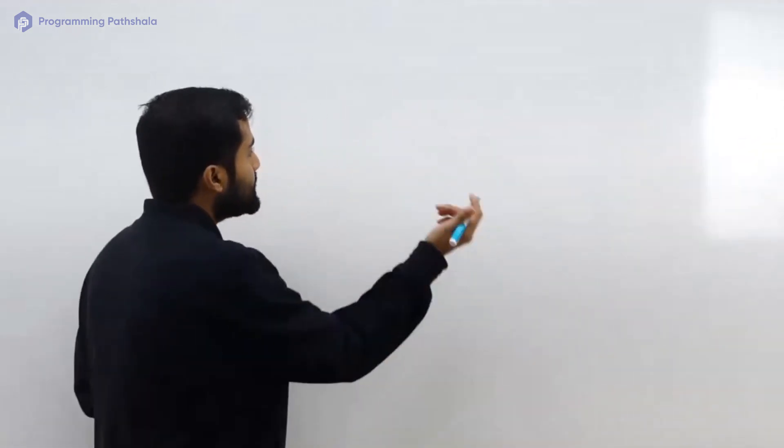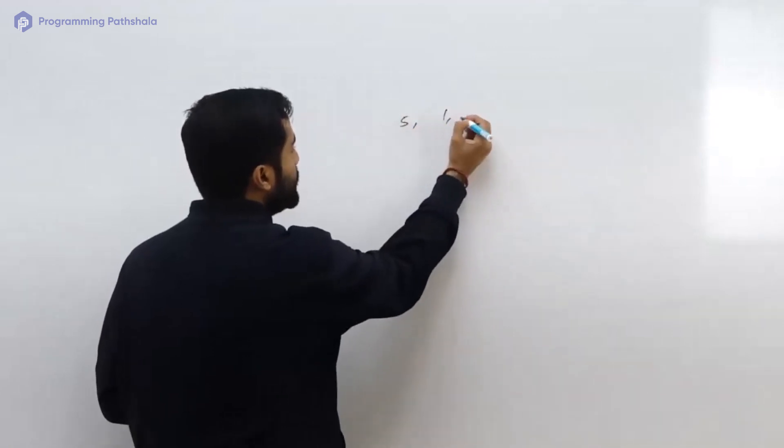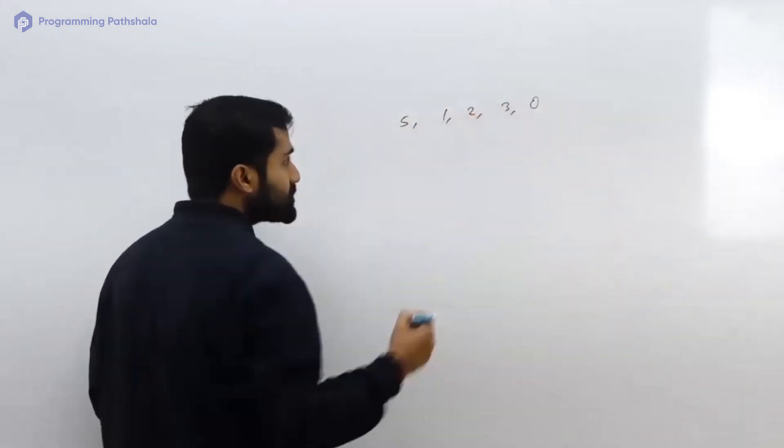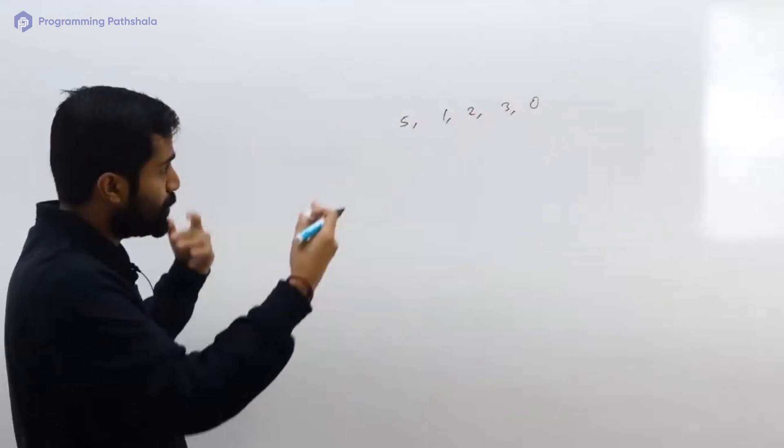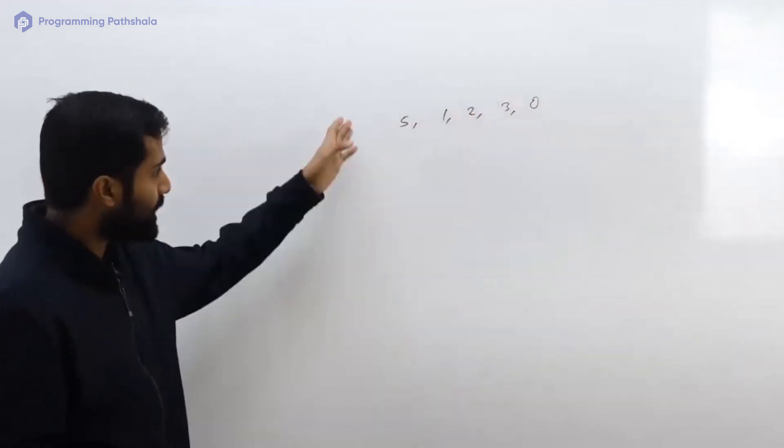And those 100 integers have no relations with each other, right? Then it does not really matter how you structure their storage. If you have been given some integers like 5, 1, 2, 3, 0, it does not really matter how you store them.